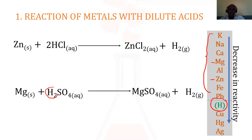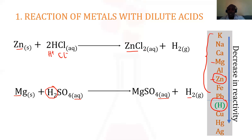Magnesium can displace hydrogen from sulfuric acid to form hydrogen gas and magnesium sulfate, which dissolves in the liquid present in the acid. Zinc is also a metal above hydrogen in the reactivity series, so it can displace hydrogen from hydrochloric acid, producing zinc chloride — note the valence of two — and hydrogen gas.